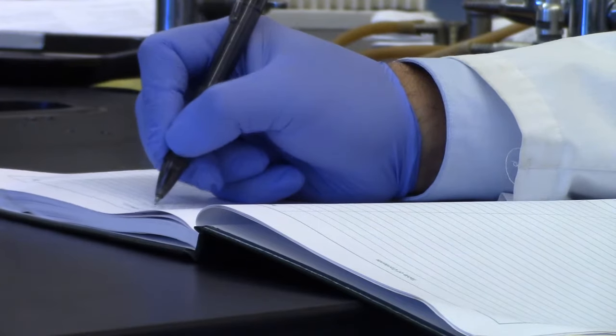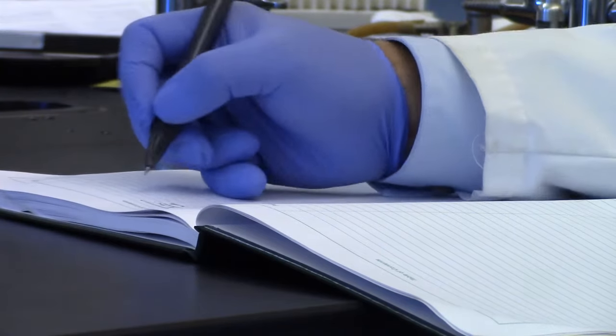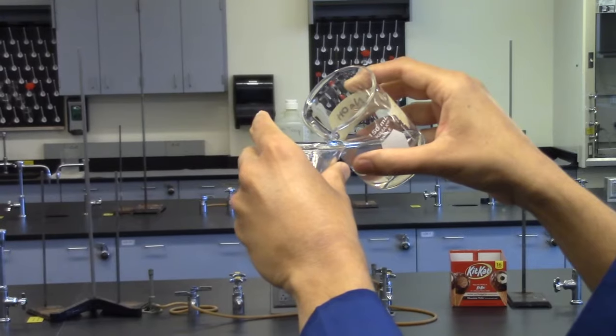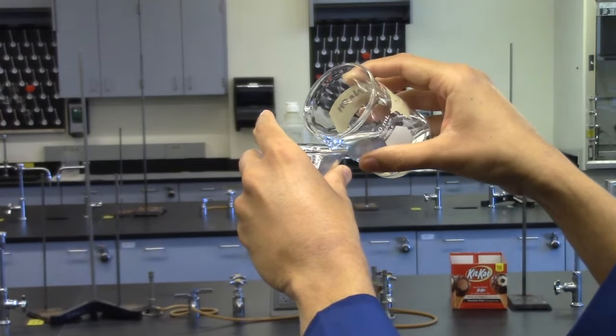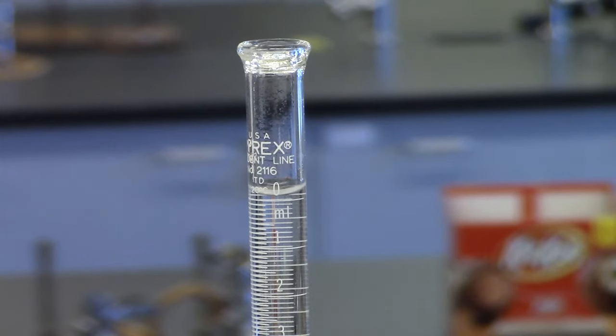B. Molarity of an unknown sulfuric acid solution. Record the number of the sulfuric acid unknown. Fill the burette with your standardized sodium hydroxide. Record initial burette reading.